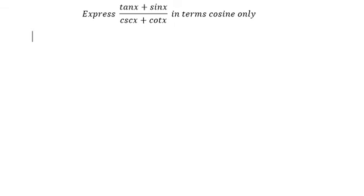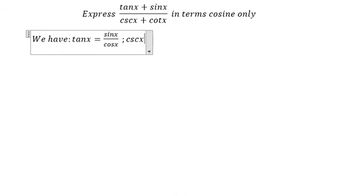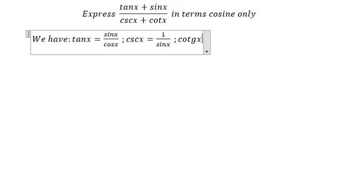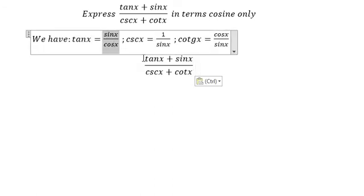We have the formula: tan x equals sine x over cos x, cos x equals 1 over sine x, and cot x equals cos x over sine x. Now we put everything into this function.